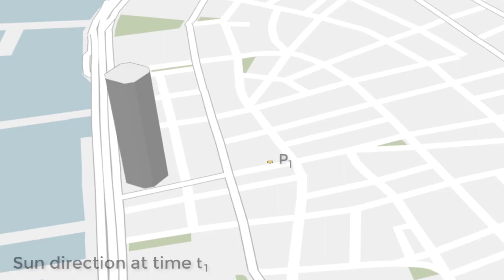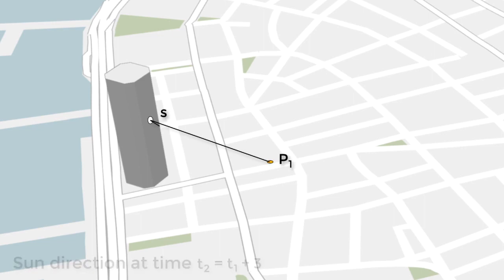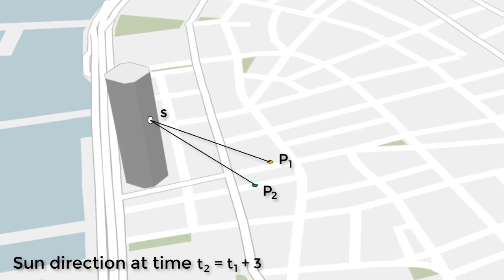Consider a point P1 on the ground. Its shadow source at time T1 is identified by tracing a ray towards the sun. The shadow due to S at time T2 falls beyond P2. The inverse accrual map maps point P1 to point P2. The shadow accumulation is then computed by drawing all lines between pairs of points obtained from the inverse accrual map.